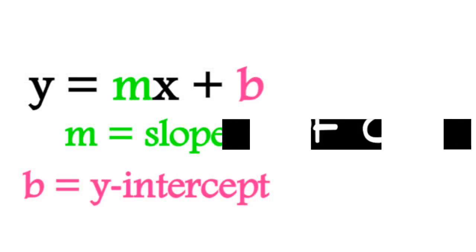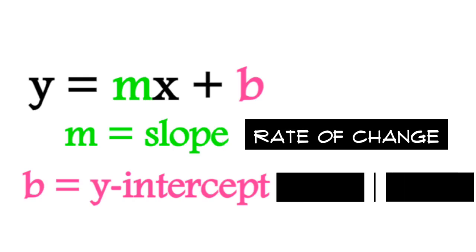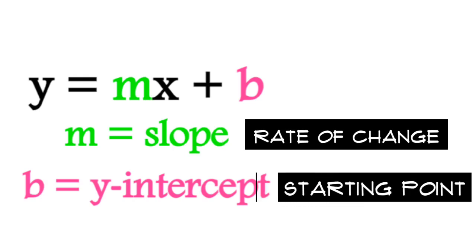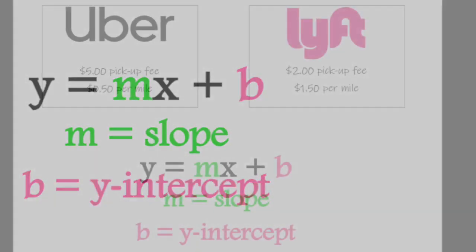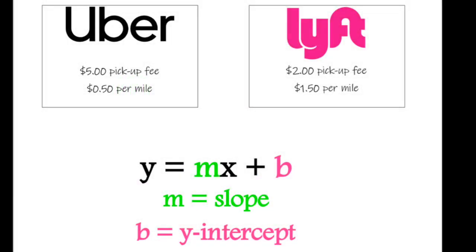Here is the line for 3x plus 2. Remember, slope can be thought of as the rate of change and y-intercept as the starting point. Let's keep that in mind as we compare two companies: Uber versus Lyft. Which is the better choice?